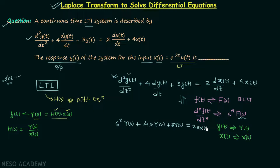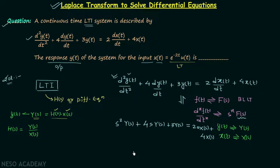Continuing the right-hand side: the Laplace transform of 4·x(t) is 4·X(s). So the full Laplace transform of the differential equation is: on the left, 2s²·Y(s) + 4s·Y(s) + 3·Y(s), and on the right, 2s·X(s) + 4·X(s). Taking Y(s) common on the left gives Y(s)·(s² + 4s + 3).